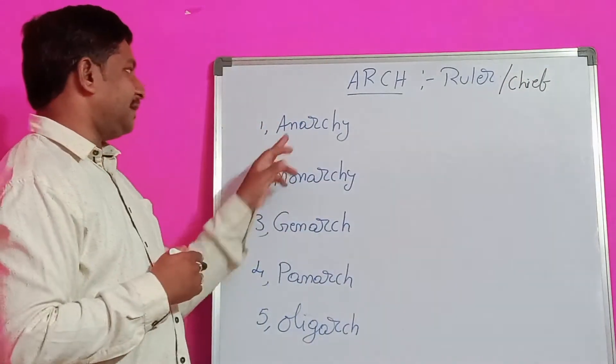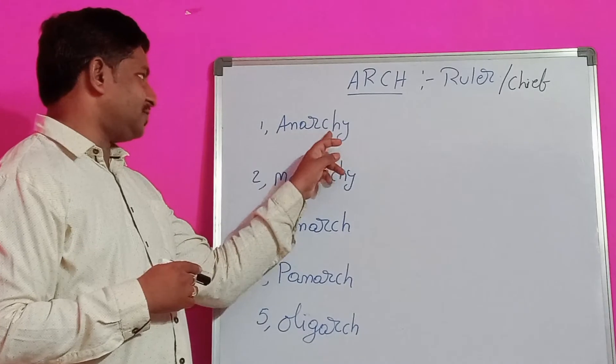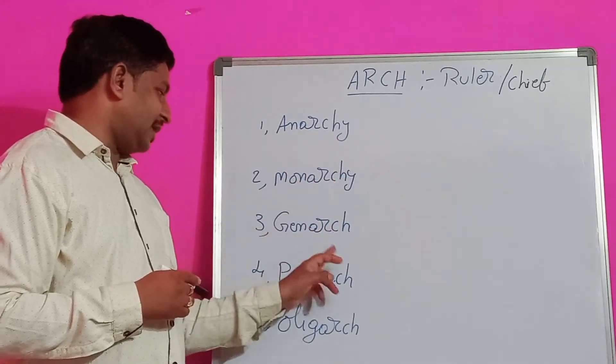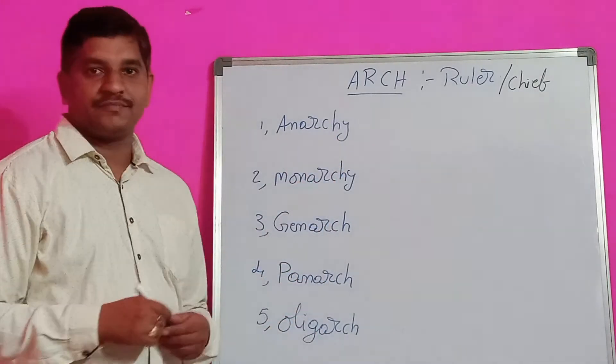We have the following words with the root ARCH: Anarchy, Monarchy, Janarchy, Panarch, and Oligarch. We will discuss this vocabulary.